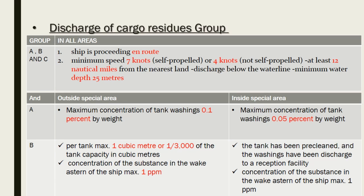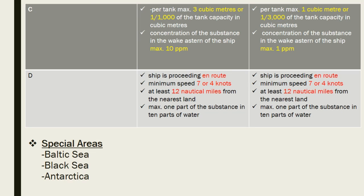Under Annexure 2, we have discharge regulations for all categories A, B, and C in all areas, divided into outside the special area and inside the special area. Category C and D regulations are also provided under both areas. The special areas under this annexure are the Baltic Sea, Black Sea, and Antarctica.